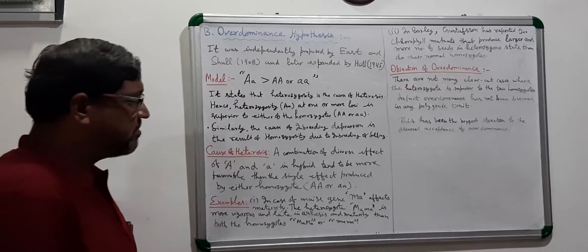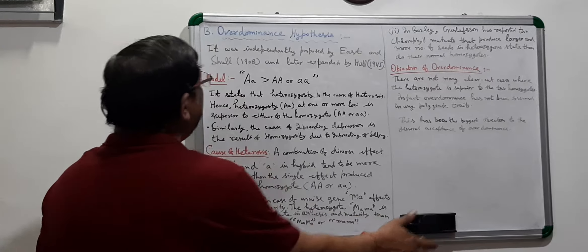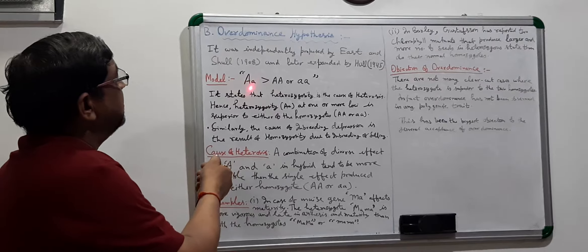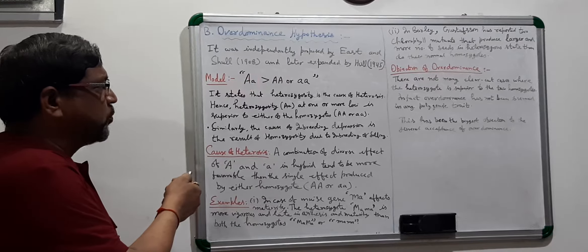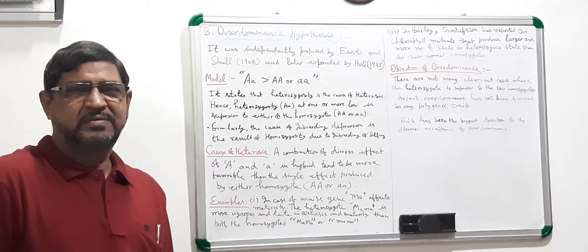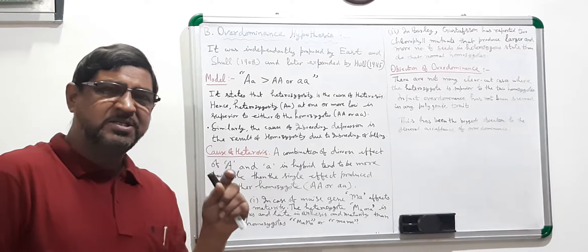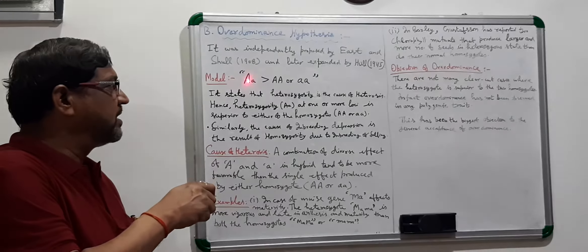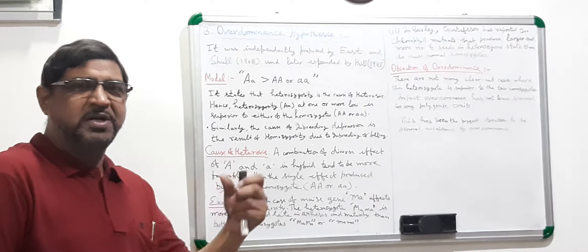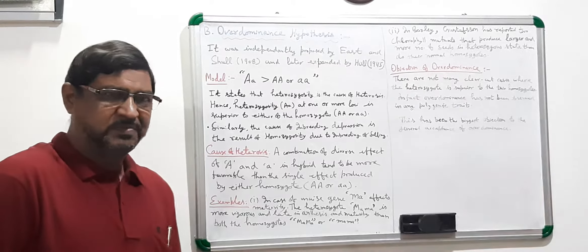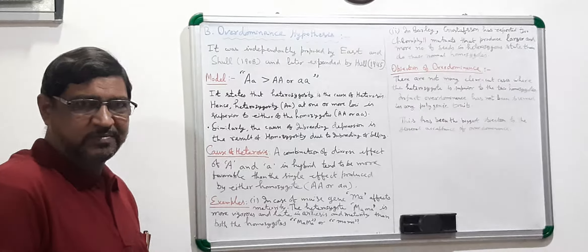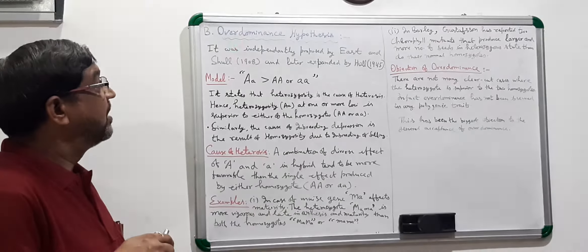If you see the model of this hypothesis, the model is capital A, small a — the heterozygote is always superior to both the homozygotes. Of course, in the dominance case, the heterozygote is equivalent to the dominant homozygote, which is superior to the recessive homozygote. But here, the heterozygote is superior to both homozygotes — this is the case of Over Dominance.